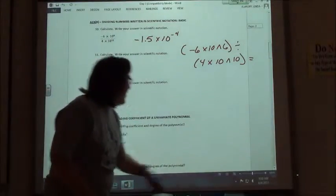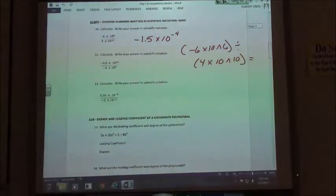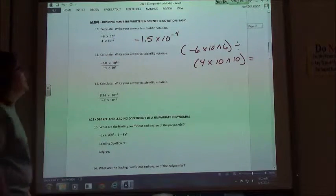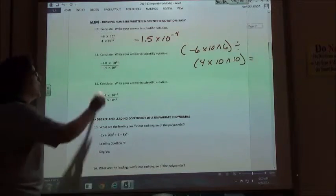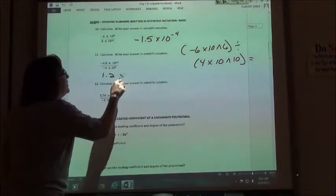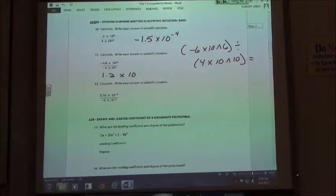Number 11, if I go ahead and do that one. Negative 4.8 divided by negative 4 would be 1.2 times 10 to the 2nd power. 11 minus 9 would give me positive 2.